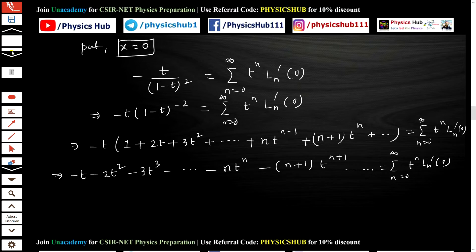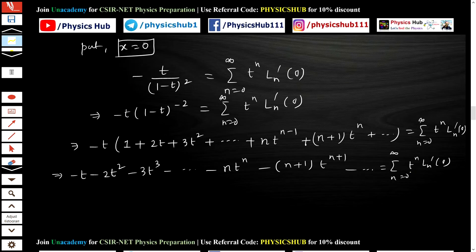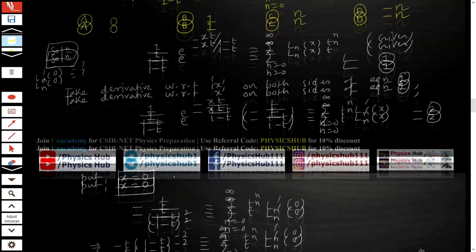So ln'(0) is basically nothing but the coefficient of t^n. If you equate the coefficient of t^n on both sides, that should give you ln'(n). So if you equate, you can see ln'(0) equals -n, and it is matching with option D. So option D is the correct option for this question.